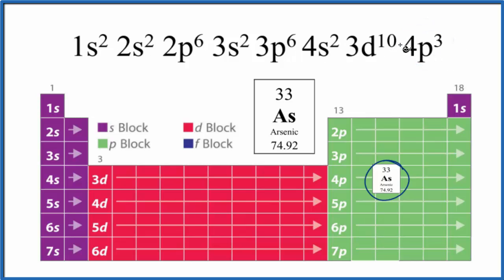So this is the electron configuration for arsenic. Sometimes you'll see the 3d written before the 4s. Either way it's the same thing.